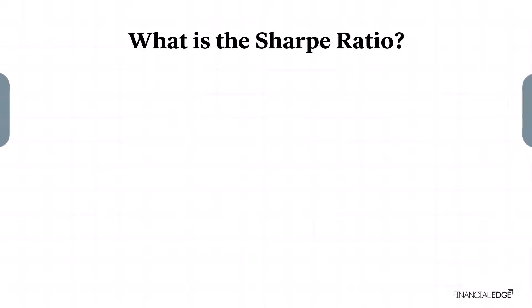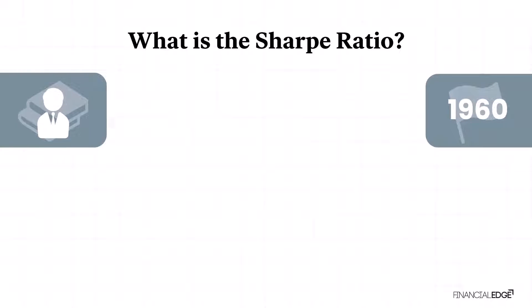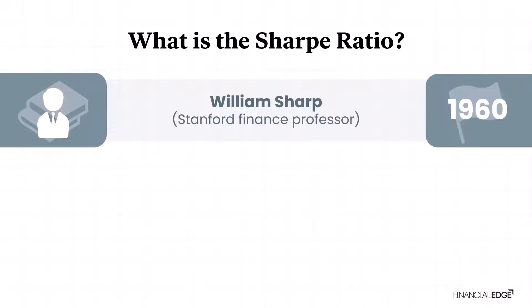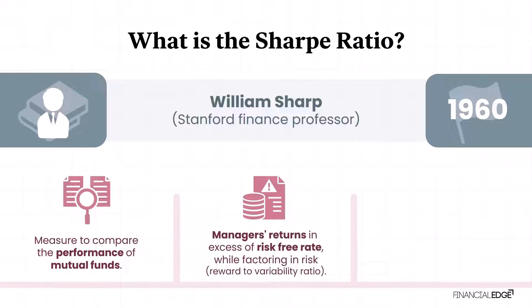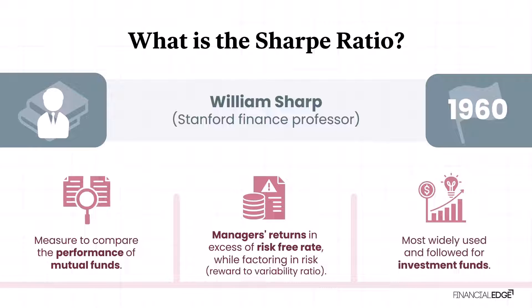The Sharpe Ratio was first devised in the mid-1960s by Stanford finance professor William Sharpe as a measure to compare the performance of mutual funds. It's a measurement of the manager's returns in excess of the risk-free rate, while factoring in the risk taken on by the manager. You'll also hear it called the reward-to-variability ratio. The Sharpe Ratio to this day is probably the most widely used and followed risk-adjusted measure for investment funds.